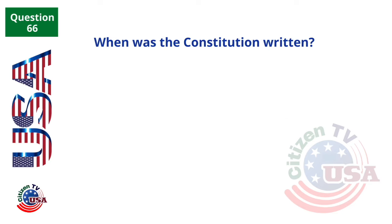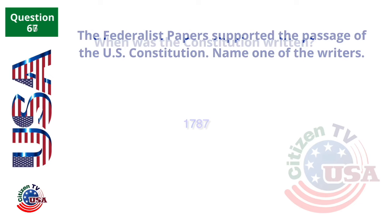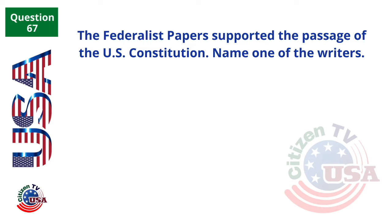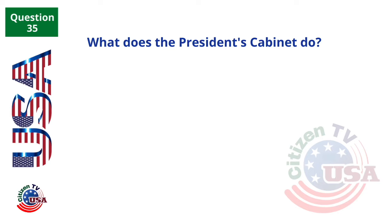When was the Constitution written? 1787. The Federalist Papers supported the passage of the U.S. Constitution. Name one of the writers. James Madison. What does the president's cabinet do? Advises the president.